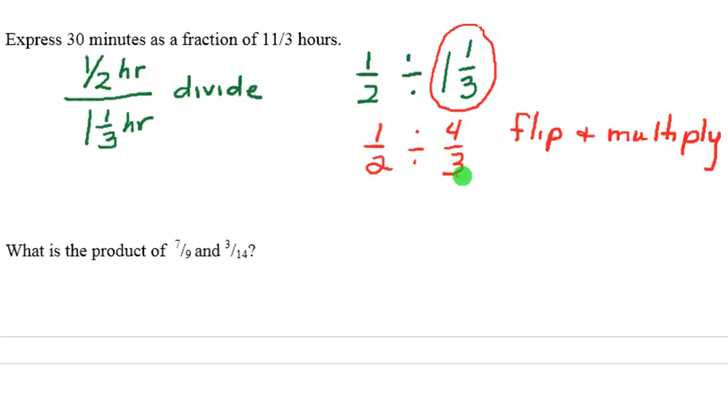Which means you take the fraction that's behind the division sign, that would be this second one, this 4/3. And it gets flipped upside down. That's called the reciprocal of the fraction. And then this division symbol becomes a multiplication. Flip and multiply. So 1/2 times 3 over 4. You see how we flip this guy and we change that to a times.